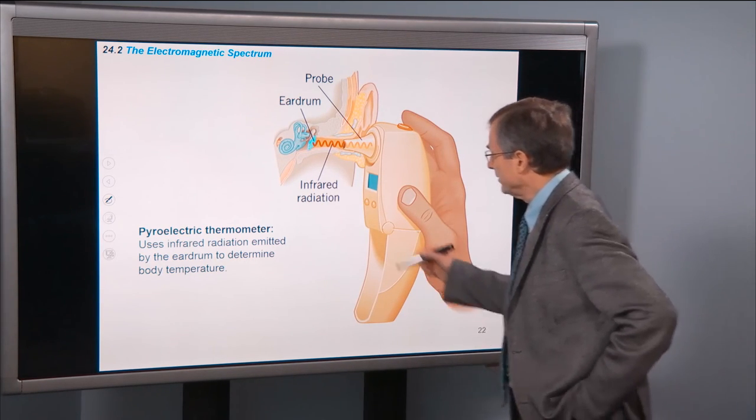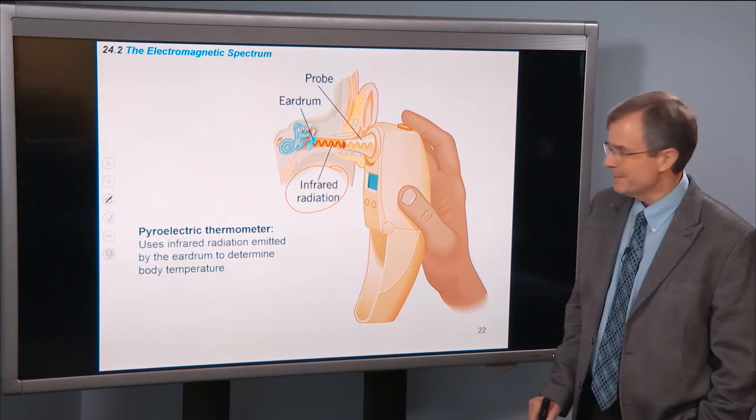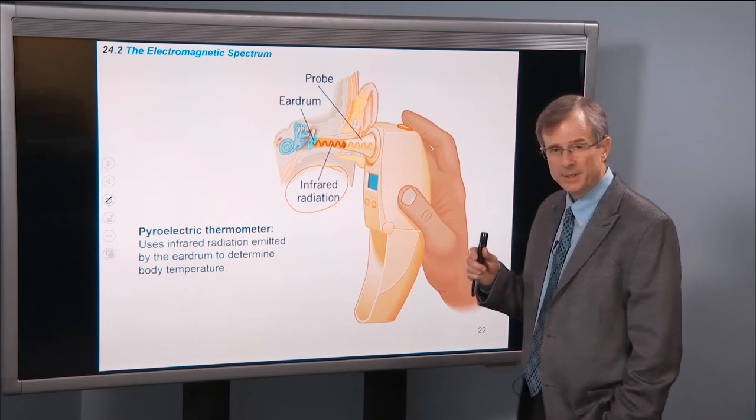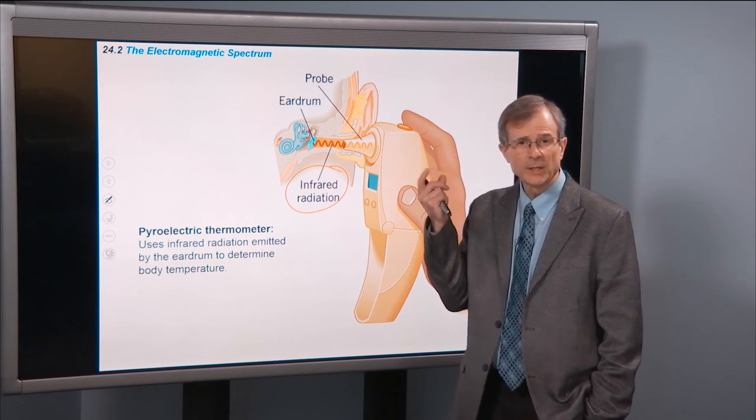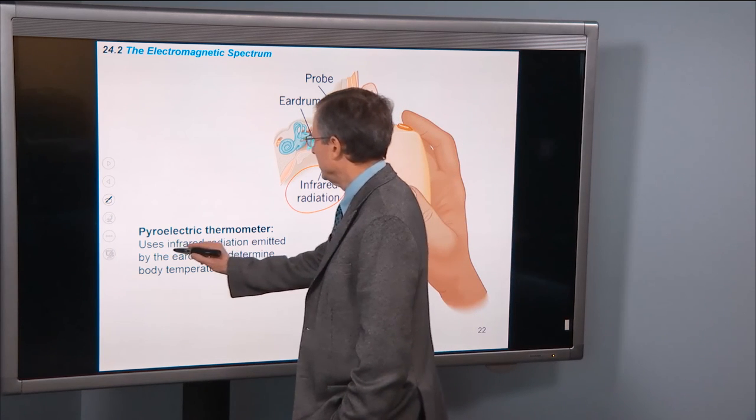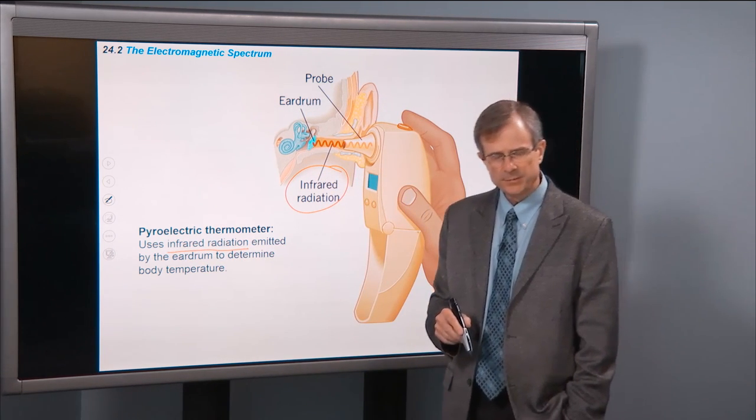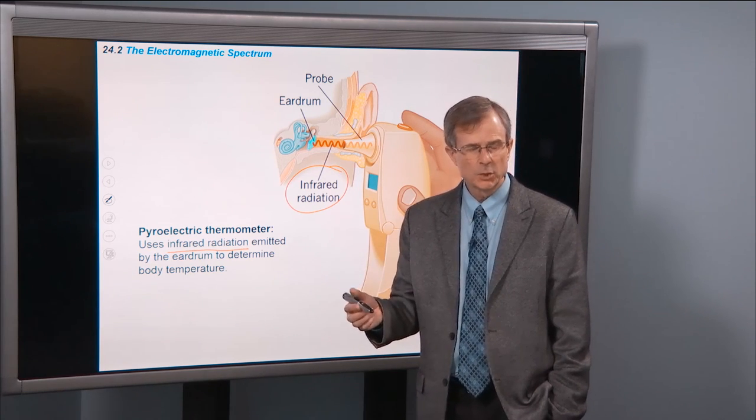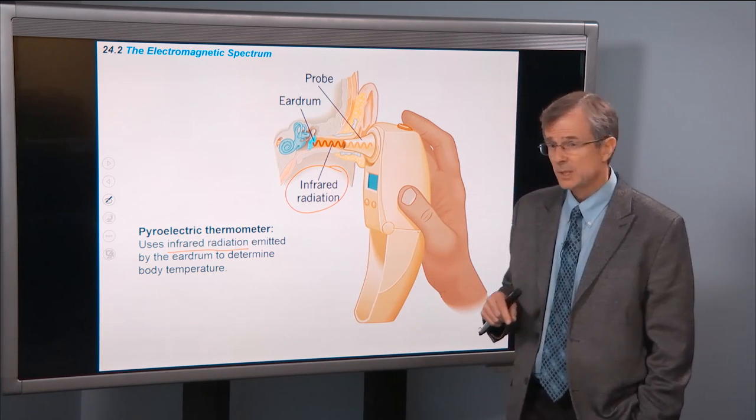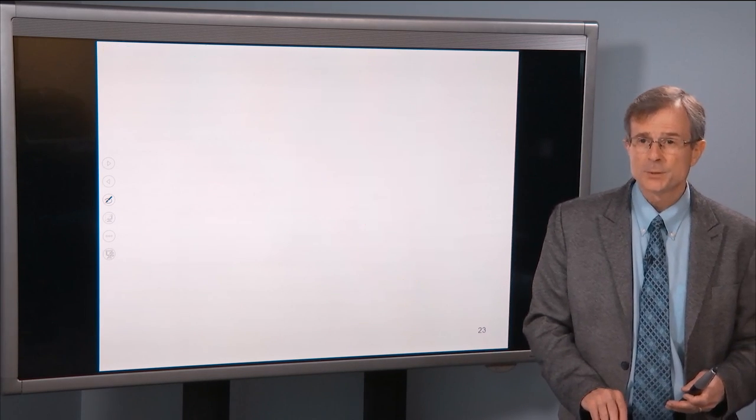One use of infrared radiation is for the so-called pyroelectric thermometer. These are the ones that the doctors just stick into your ear and they quickly get a temperature reading. It looks at the infrared radiation emitted by the quantity of infrared radiation emitted by the eardrum and surrounding tissues to determine your body temperature. Very efficient, very quick measurement.